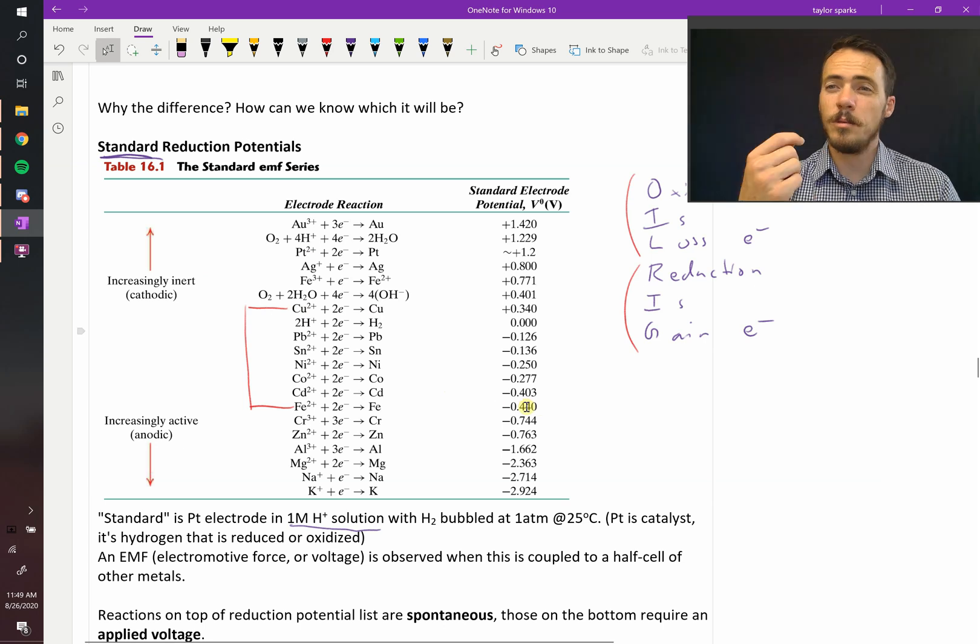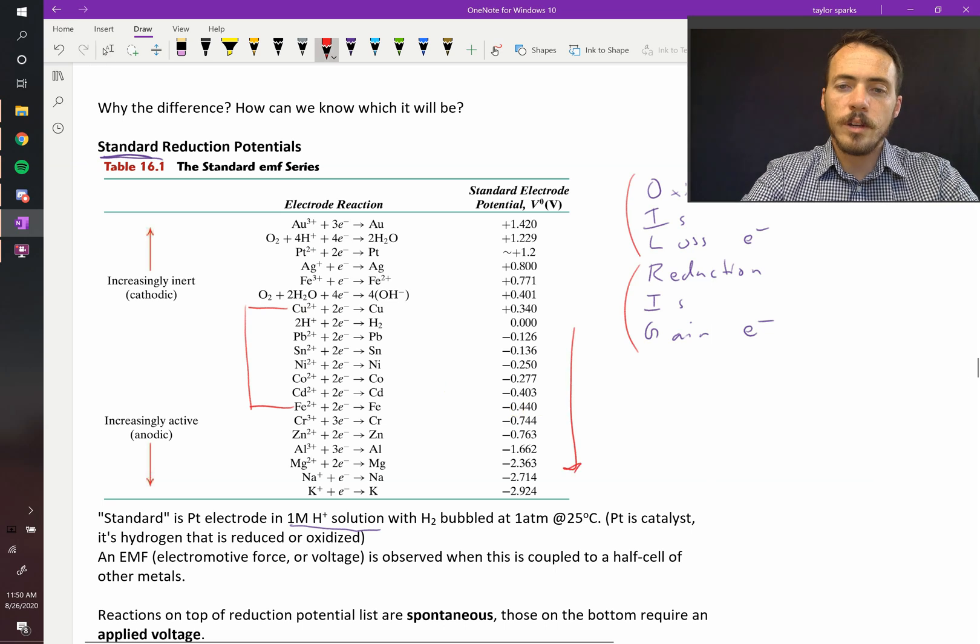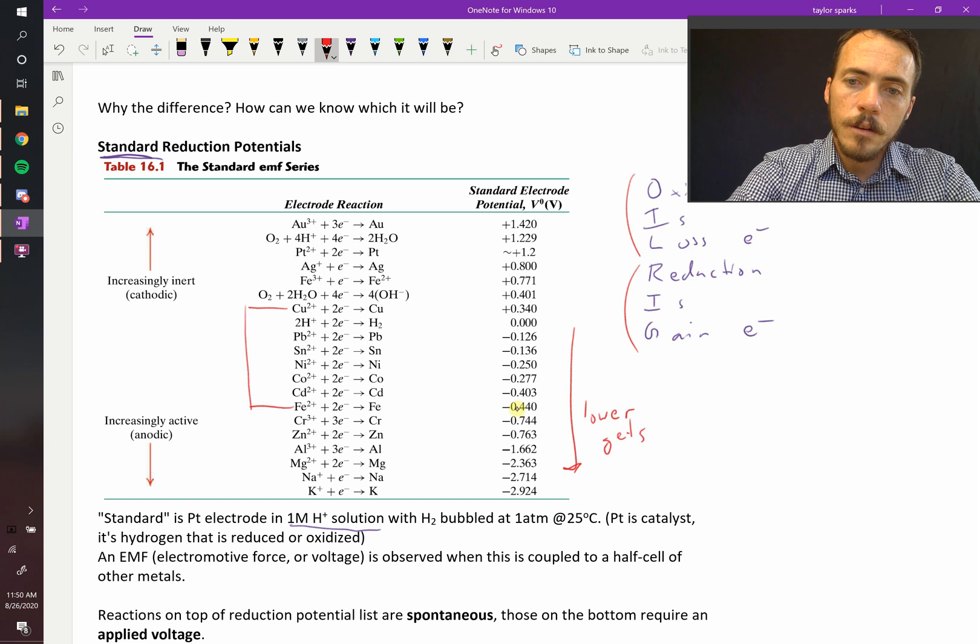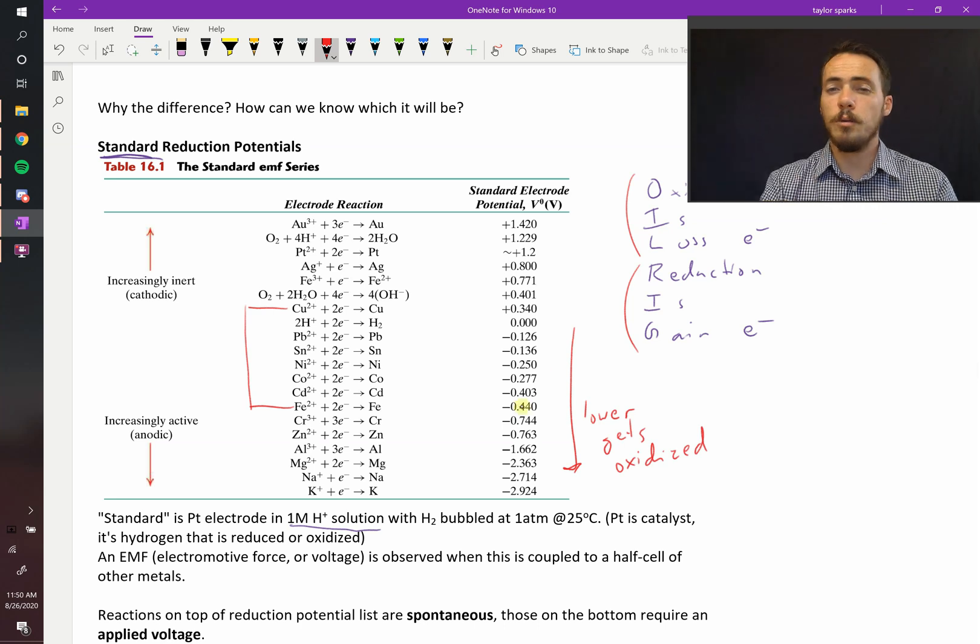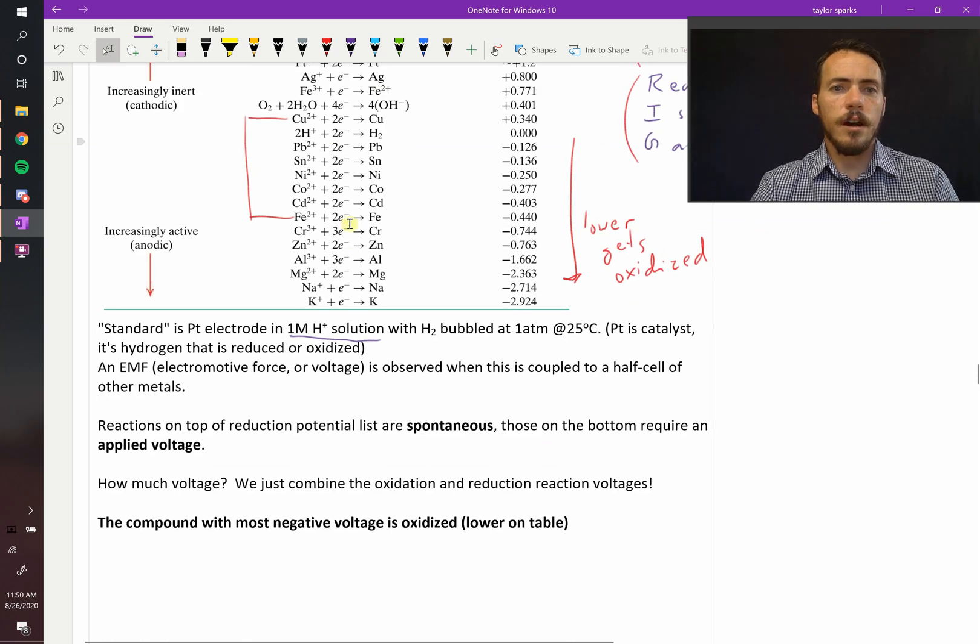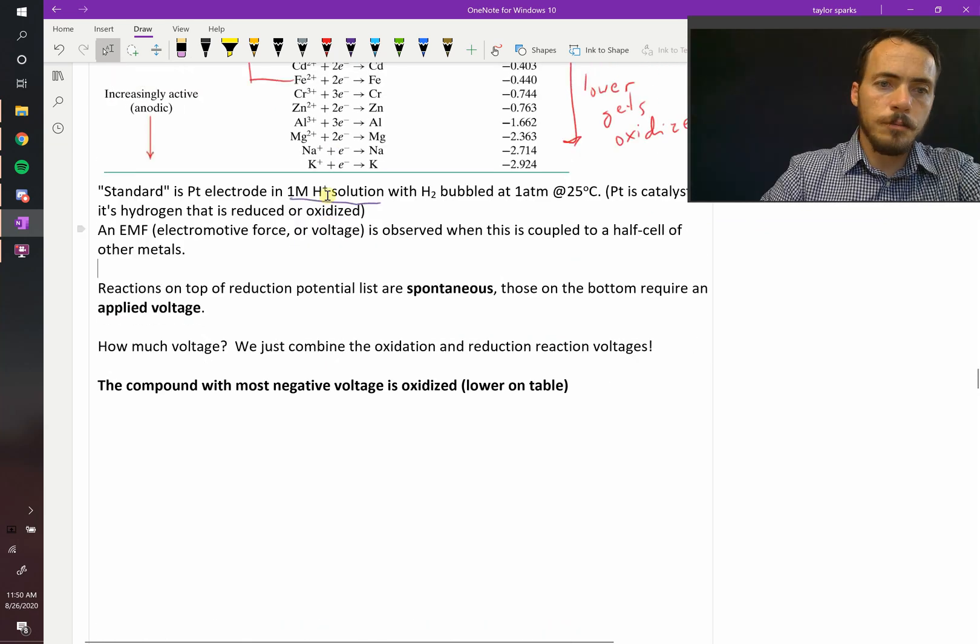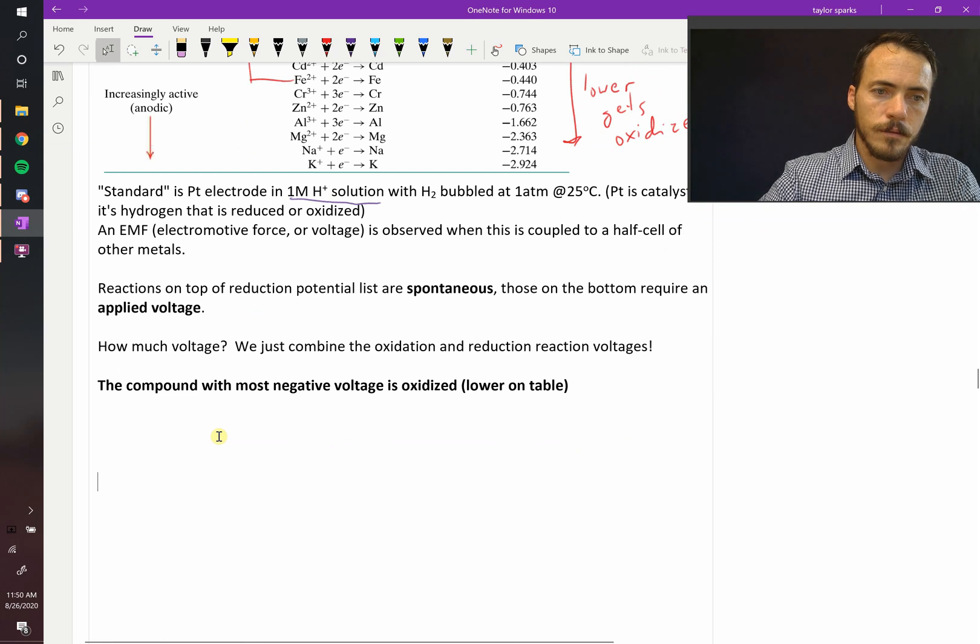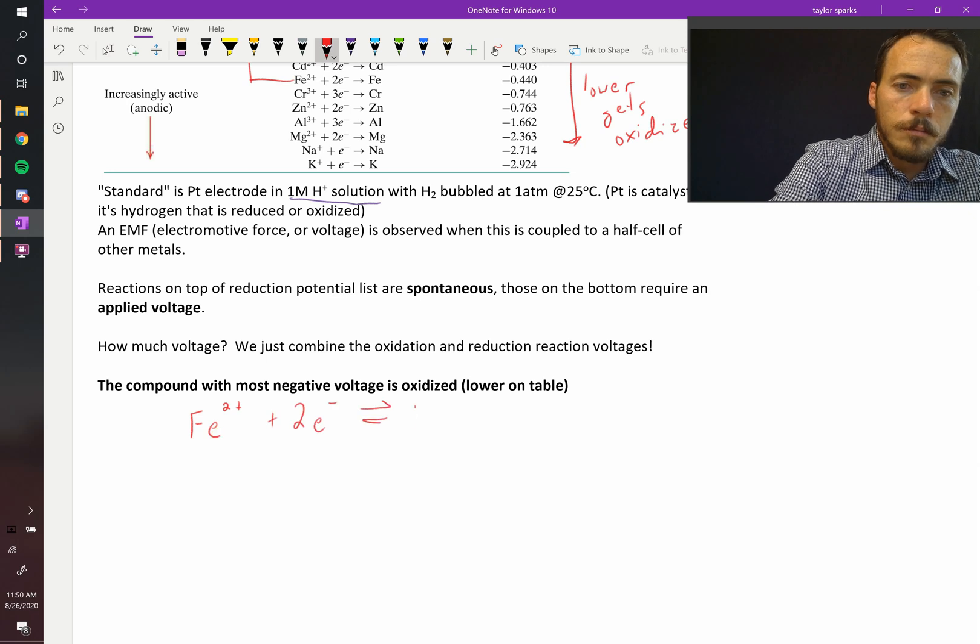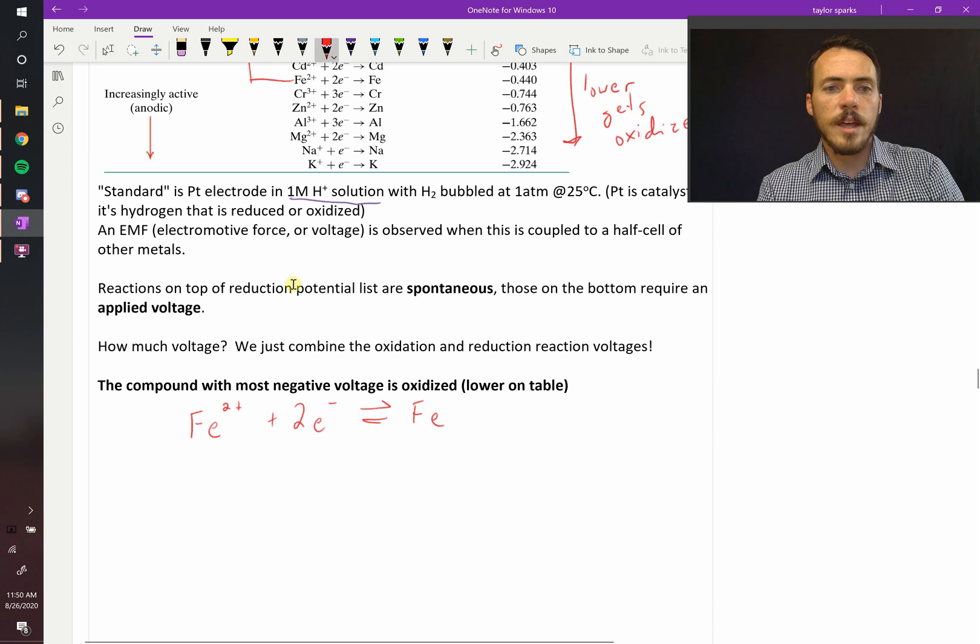You're going to flip the one that's costing you more in terms for it to happen. A negative voltage. Remember, that's voltage we have to apply to it. So that's not good. So in this case, we're going to take the one that's lower down on this table. The one that's lower down over here is the one that gets oxidized. Lower gets oxidized. Because right now, they're written as reductions. But we could flip that reaction and it would become an oxidation reaction.